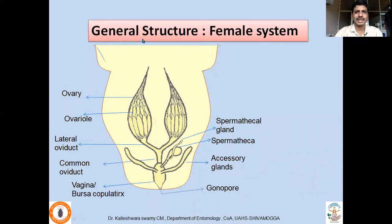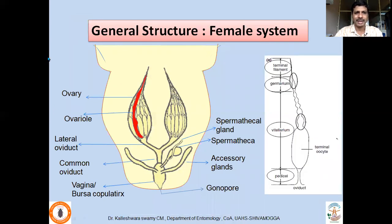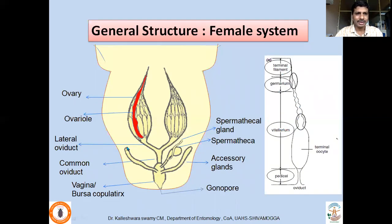The female reproductive system consists of a pair of ovaries. Each ovary consists of a number of ovarioles arranged side by side. There may be hundreds of ovarioles in a single insect or only one or two in others. Each ovariole consists of a terminal filament, germarium, vitellarium, and pedicel. The germarium is where oocytes are synthesized, then nourished by nurse cells, and the matured eggs move down and are temporarily stored before passing through the pedicel into the lateral oviduct.